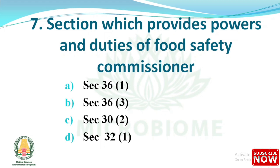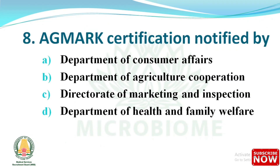Next question: which section provides powers and duties of the food safety commissioner? Options are: section 36 sub-section 1, section 36 sub-section 3, section 30 sub-section 2, section 32. The right answer is option C: section 30 sub-section 2.